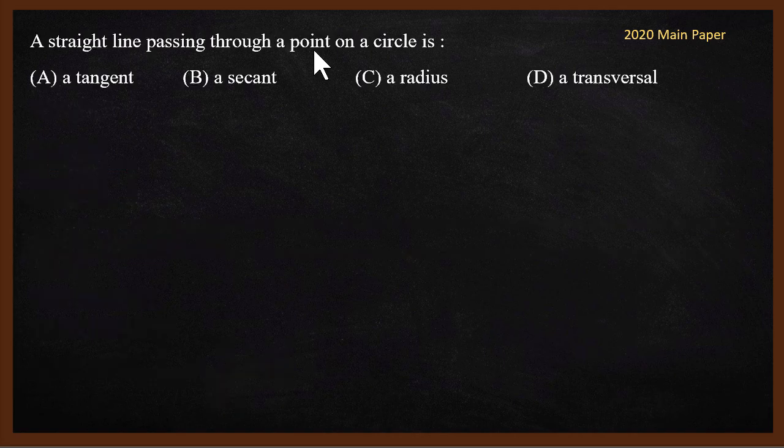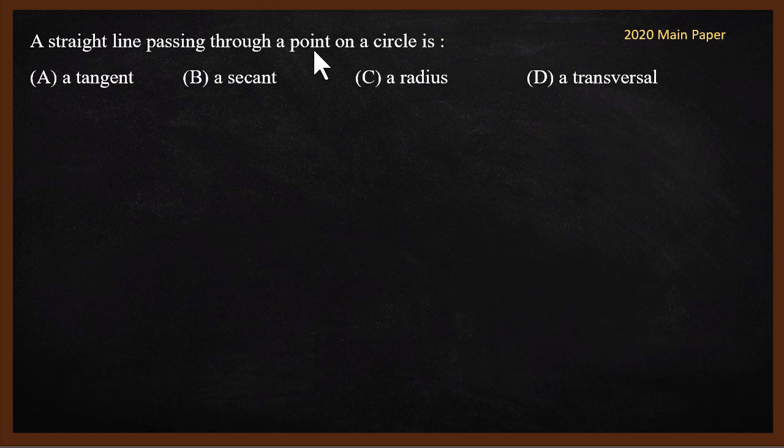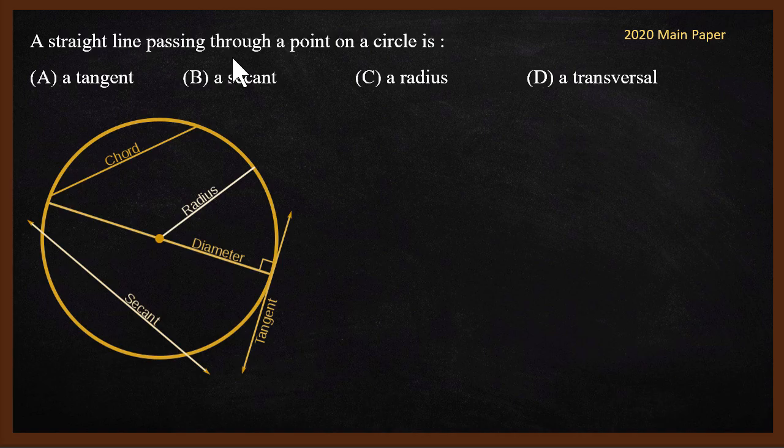It is circles question. The question is a straight line passing through a point on a circle, again 2020 main paper. The straight line, the circle, one point intersects. We'll use this diagram to solve.